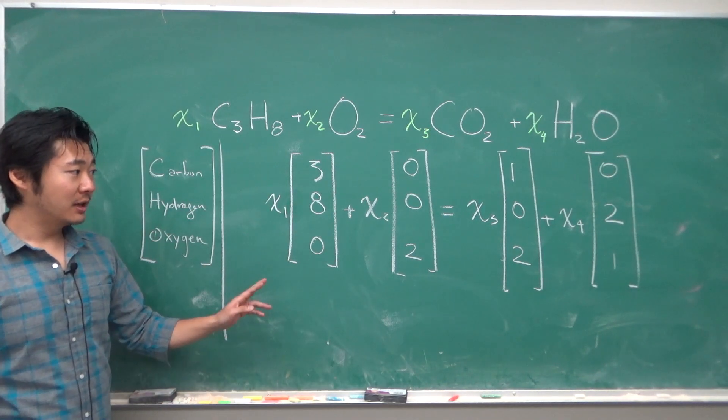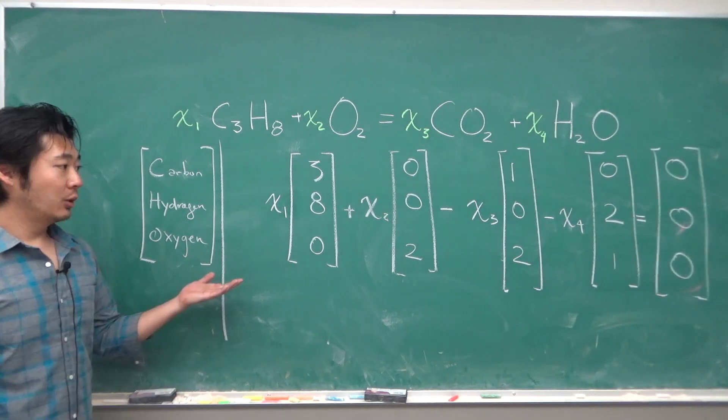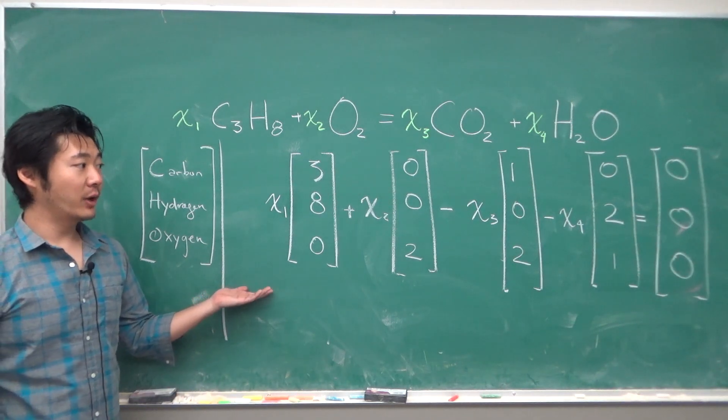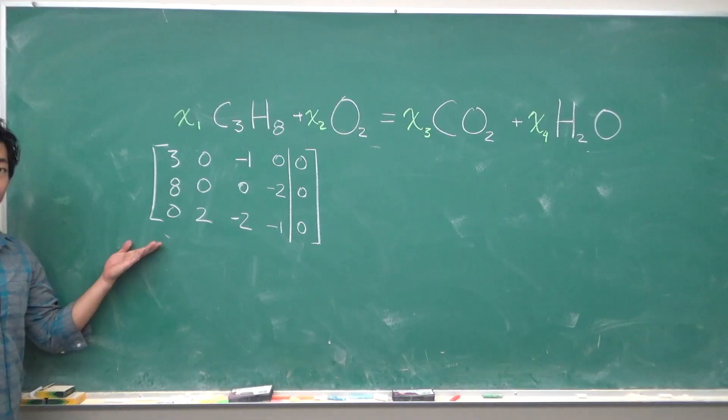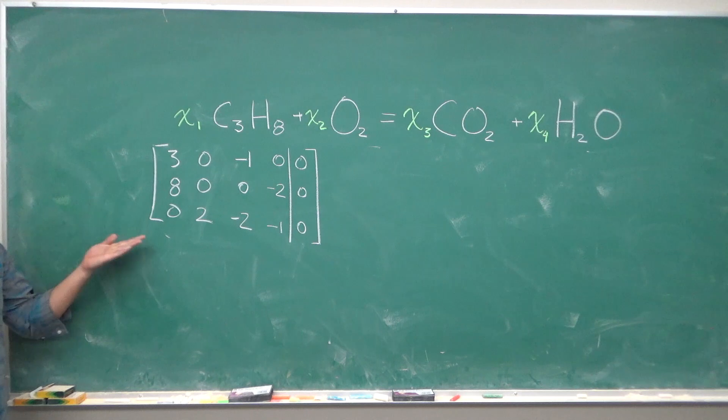Now, we can move everything to one side, so that we want to solve for this vector equation. Now we can convert this into its augmented matrix form. The augmented matrix form is a matrix like this.